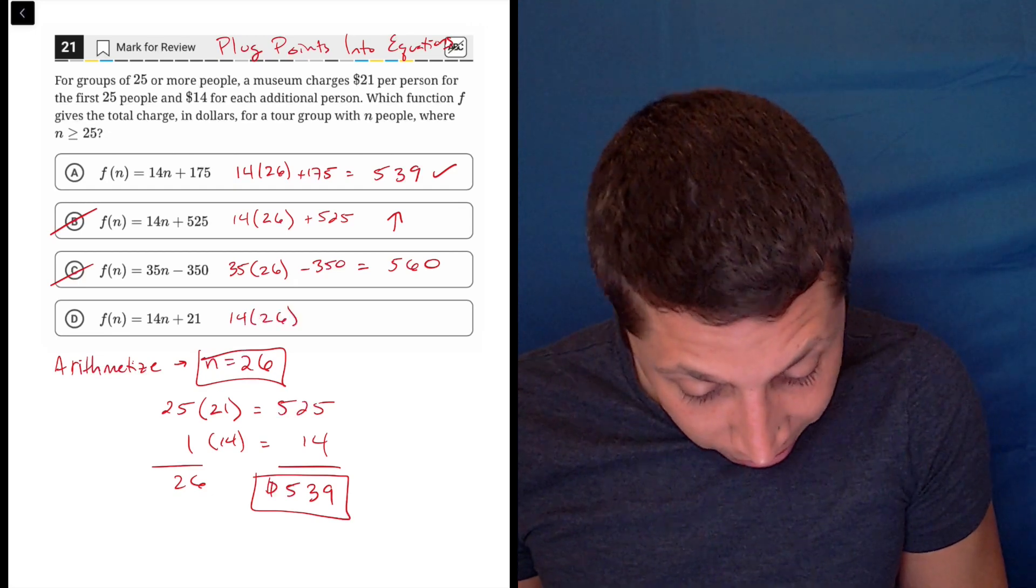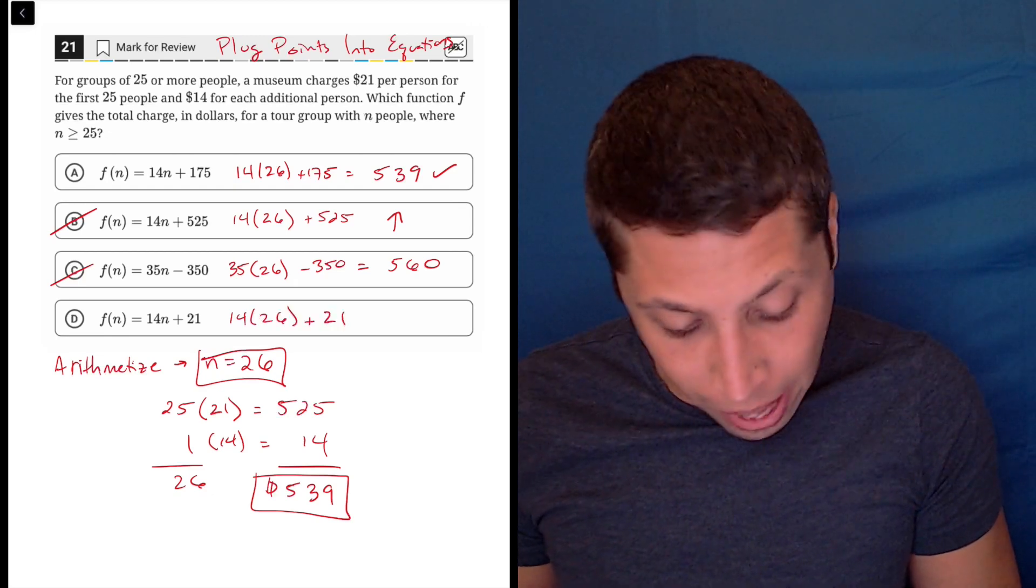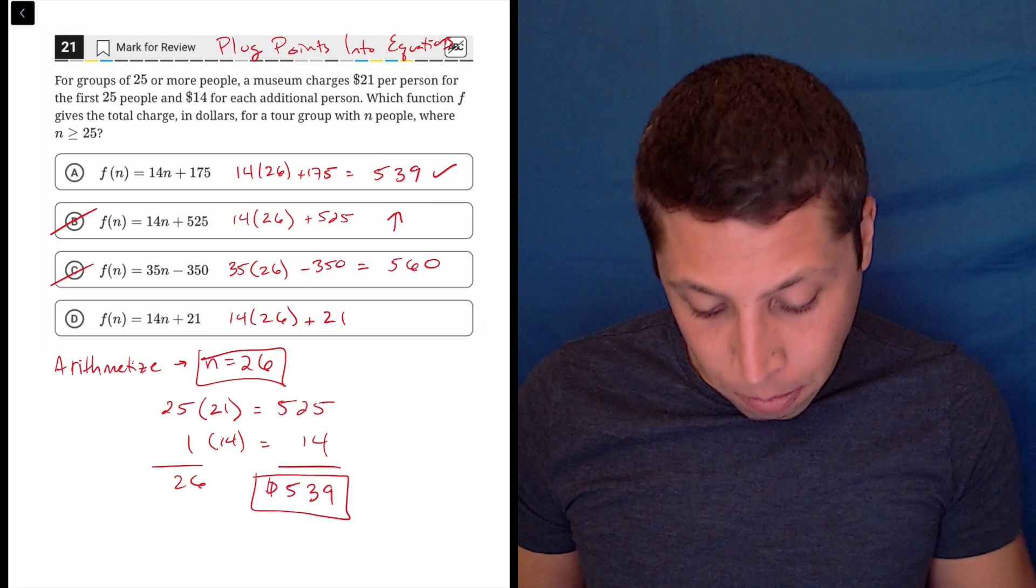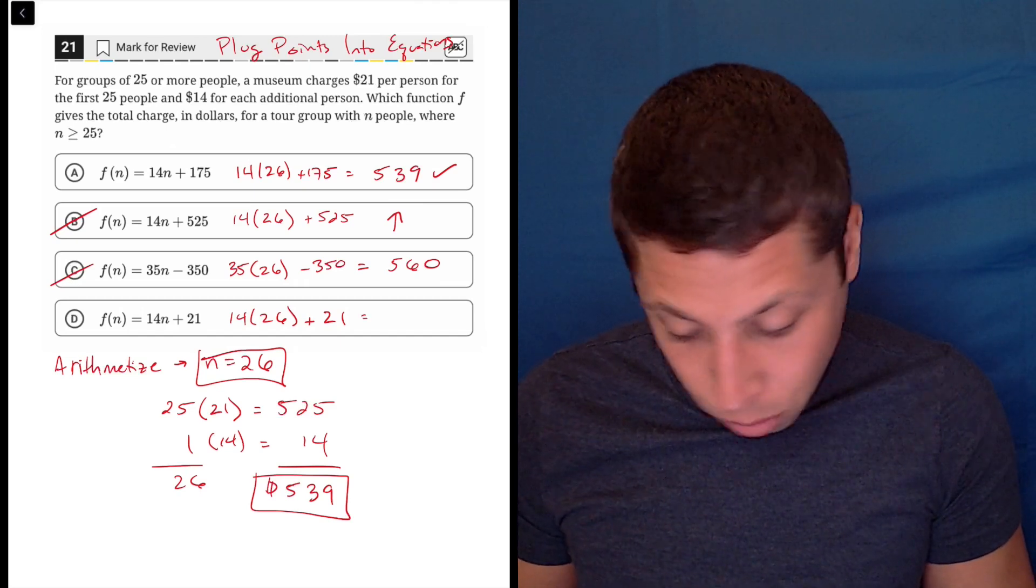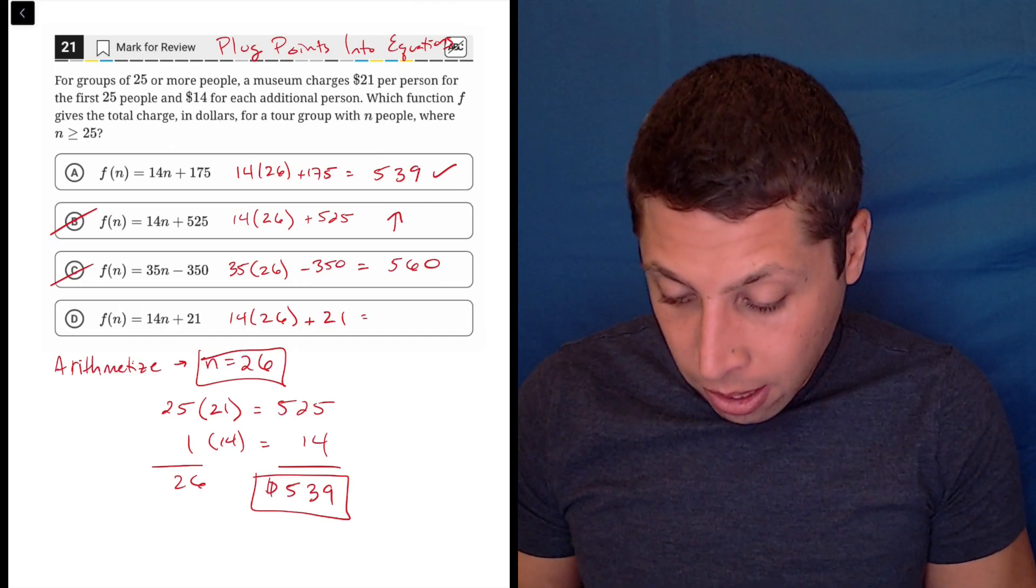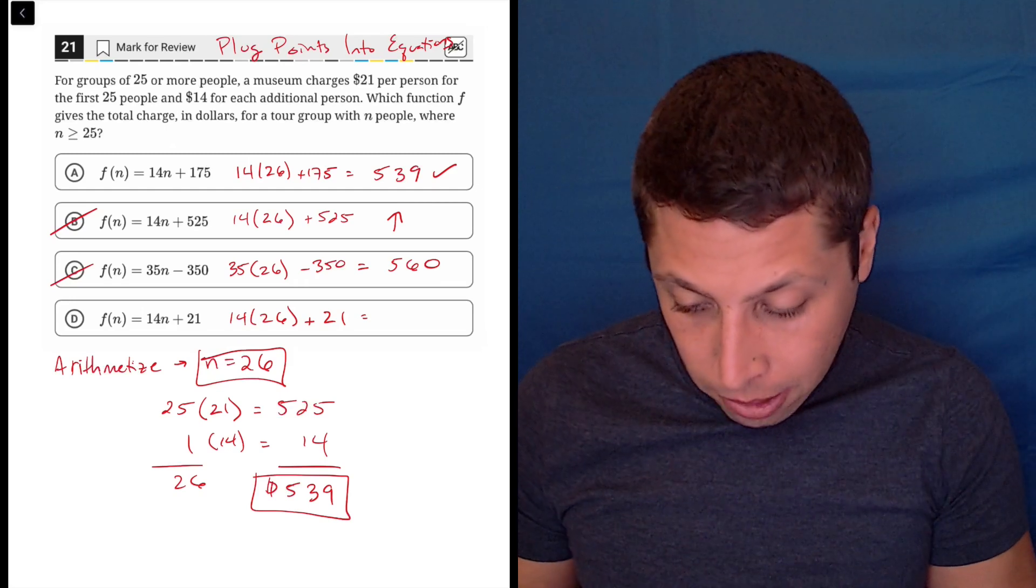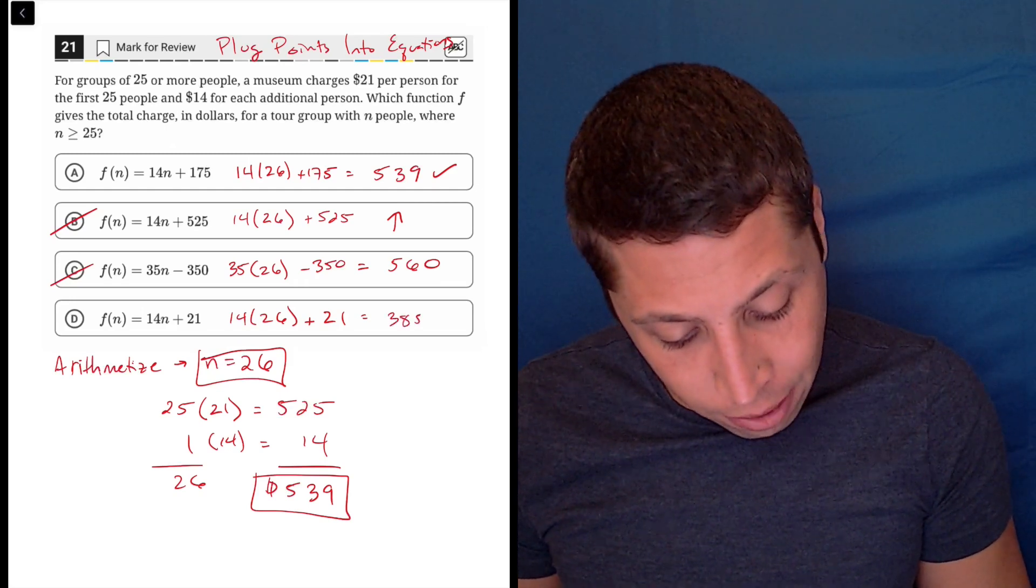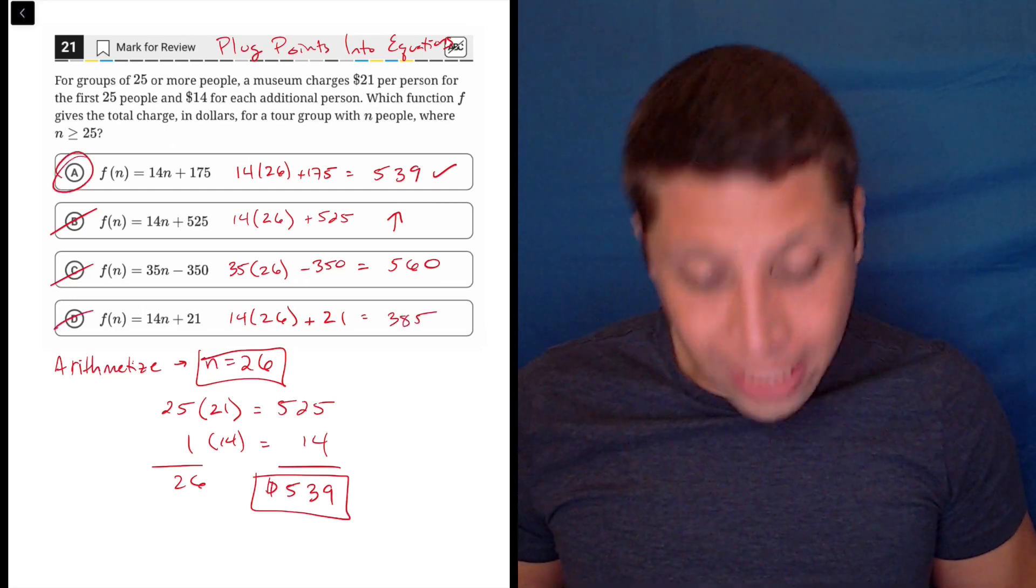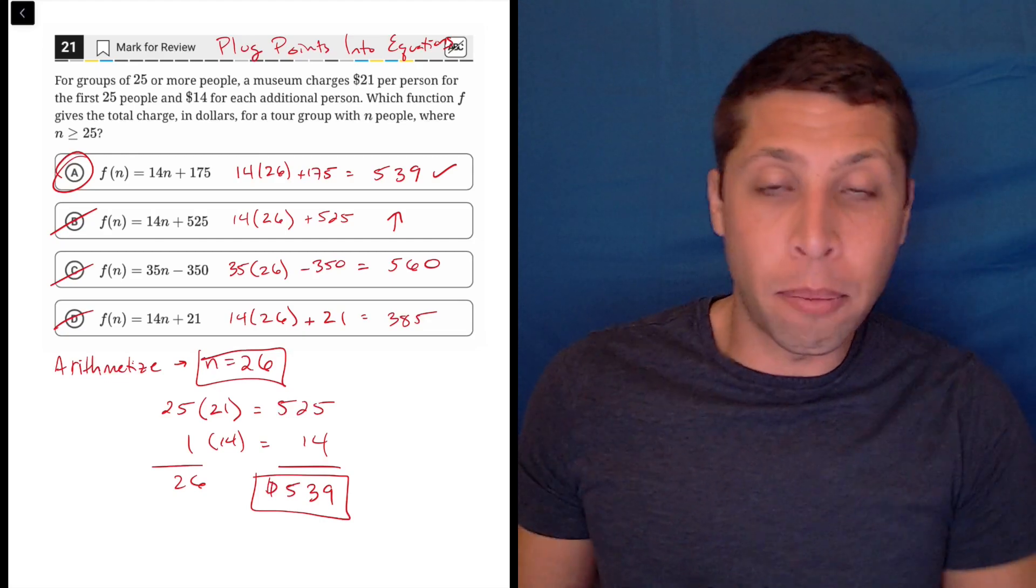14 times 26 plus 21. This kind of comes back to choice A. It's the wrong number we're adding in. So 14 times 26, what did I say that was? That's 364 plus 21, 385. So look at that. Only one equation gave me the number I would expect.